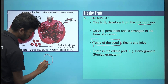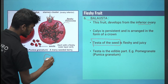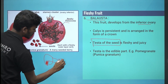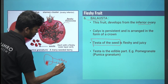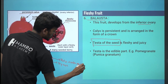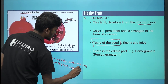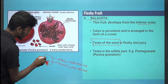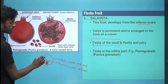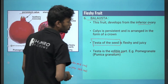This is a seed coat. This is a layer of seed coat. There is an outer seed coat and inner seed coat. This is the edible part of the pome.